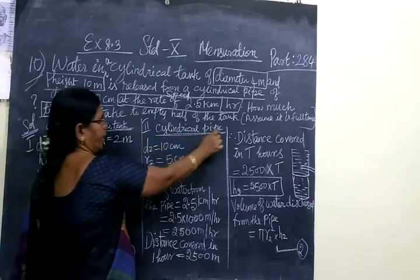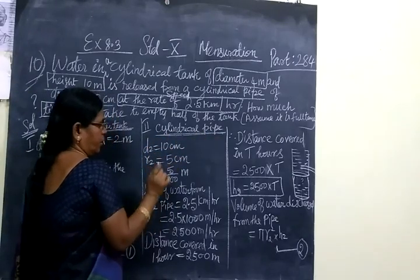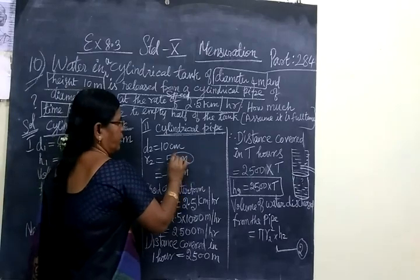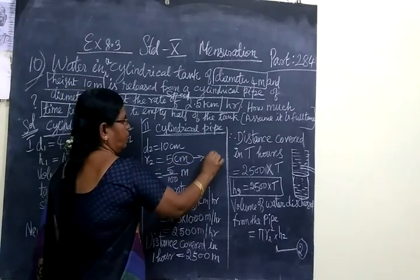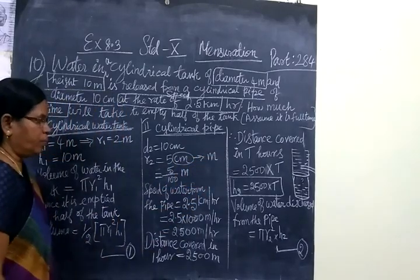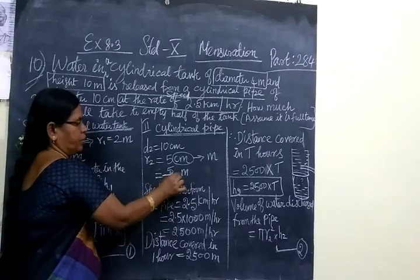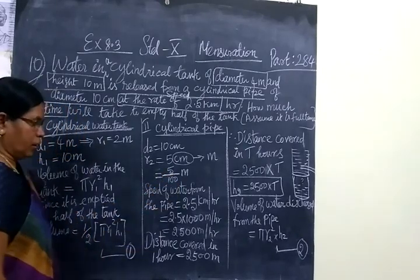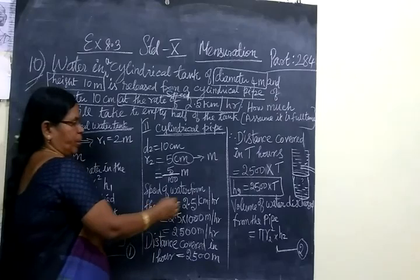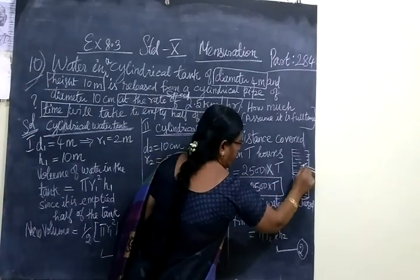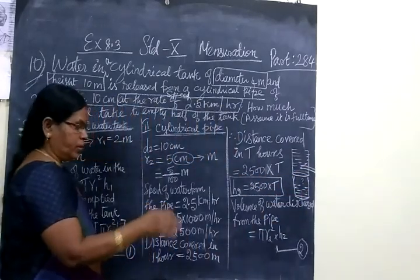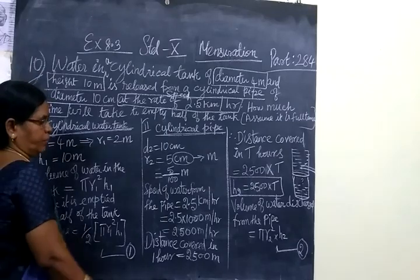Next one is cylindrical pipe. Diameter and radius. Since it is given in centimeters, we are going to change into meters, divided by 100. So 5 by 100 meters.